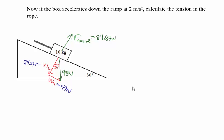In the next version, the box accelerates down the ramp at 2 meters per second squared, and we calculate the tension in the rope. Most things stay the same: the weight is 98 Newtons, the parallel component is 49 Newtons, the perpendicular component is 84.87 Newtons, and the normal force cancels the perpendicular component. The tension again pulls up the ramp. If the box accelerates down the ramp, the forces down the ramp must be bigger than those up the ramp, so the tension will be less than 49 Newtons.